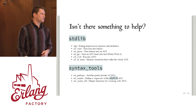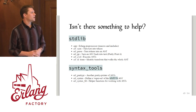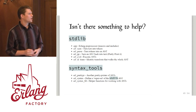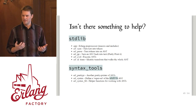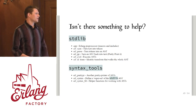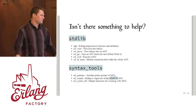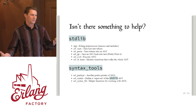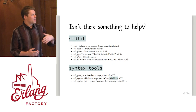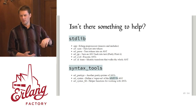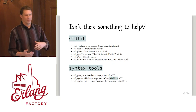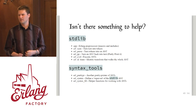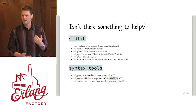Anything that stdlib considers a syntax tree, syntax_tools also considers a syntax tree — but not vice versa. So if you do any manipulation with syntax_tools, stdlib is going to choke on it until you revert it back to that simpler format. erl_syntax and syntax_lib are probably the most helpful here. erl_syntax has functions for helping you generate AST nodes more functionally — the idea being that if the syntax tree format ever changes slightly, you're using a function interface and your parse transform won't break.